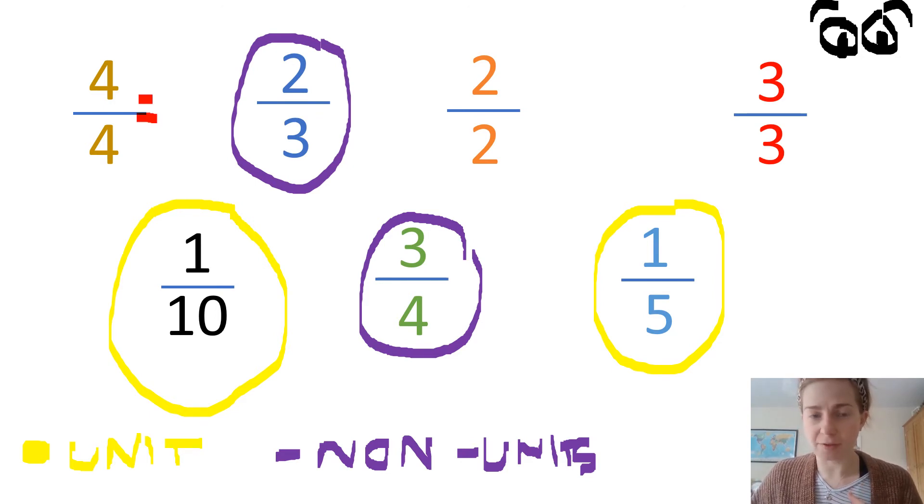So, that means the number of parts we have is the same as the whole number of parts. Which means we don't have parts of something. If we've got all the parts, we've got the whole thing. So, we have one whole. We've got all four parts out of four, we've got the whole. We've got both parts out of two, we've got a whole. We've got all three parts out of three, we've got a whole. So, these fractions are all the same as one whole.